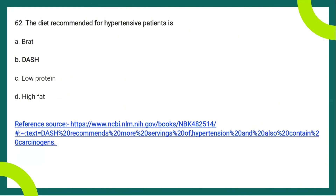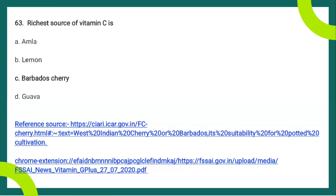The next question: what diet is recommended for hypertensive patients — BRAT, DASH, low protein, or high fat? The answer is DASH, which stands for Dietary Approaches to Stop Hypertension. A typical DASH diet includes about five servings of vegetables per day, five servings of fruits per day, seven servings of carbohydrates, low-fat dairy products (about two servings per day), lean meat products (about two servings per day), and nuts and seeds two to three times a week.